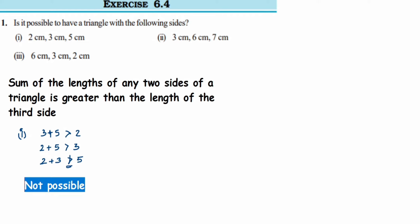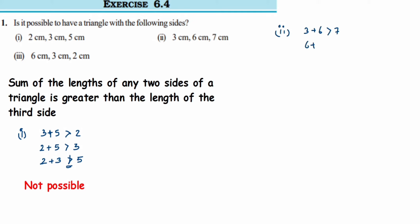Now we'll go to the second one and check the same condition. We have 3 cm, 6 cm, and 7 cm. First combination: 3 plus 6 is 9, and 9 is greater than 7. Next: 6 plus 7 is 13, and 13 is greater than 3.